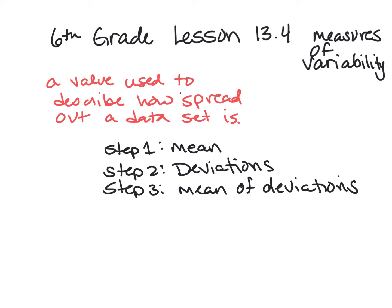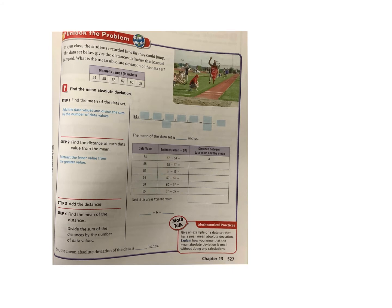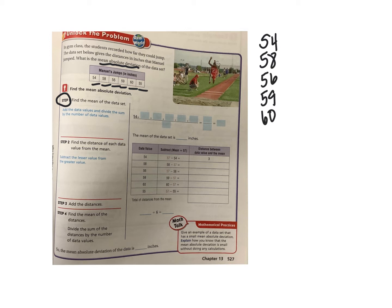Let's look at a problem and do this together. In gym class, students recorded how far they could jump. The data set gives the distances in inches that Manuel jumped: 54, 58, 56, 59, 60, and 55 inches. We need to find the mean absolute deviation of the data set. Step one: we add everything together and divide by 6, because there are six items.